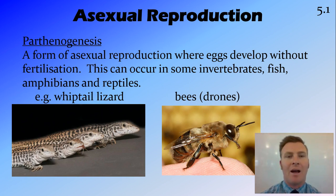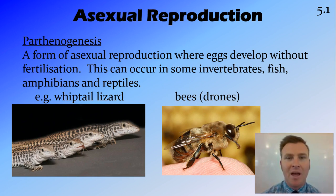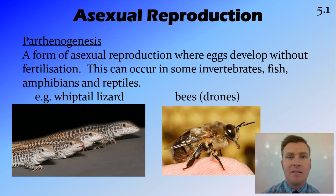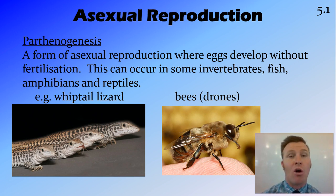Another example of asexual reproduction is parthenogenesis. This is a special form where an egg — the female gamete — can develop without being fertilized by the male gamete. This occurs in organisms that can also undergo sexual reproduction, but if not fertilized, they will actually produce an offspring themselves.